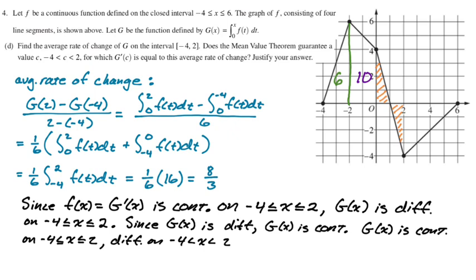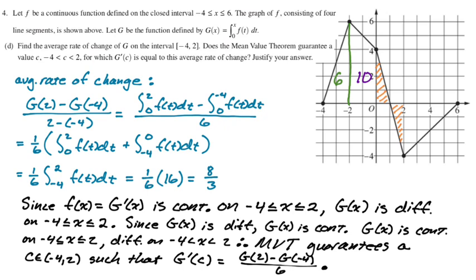So if that is the case, the mean value theorem guarantees a c between negative 4 and 2, such that g prime of c equals g of 2 minus g of negative 4 over 6. So the answer is yes, the mean value theorem does apply. So that's the whole question there, and that's problem number 4. I hope you found this helpful, and good luck.